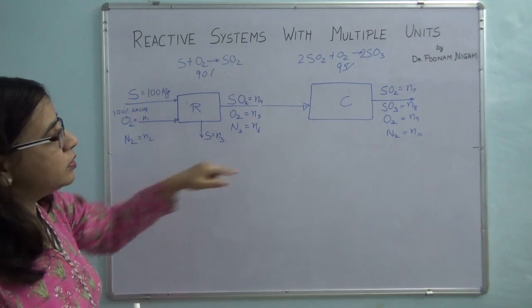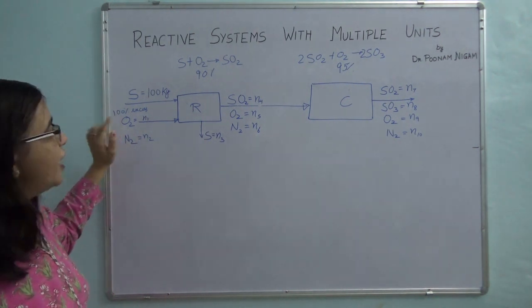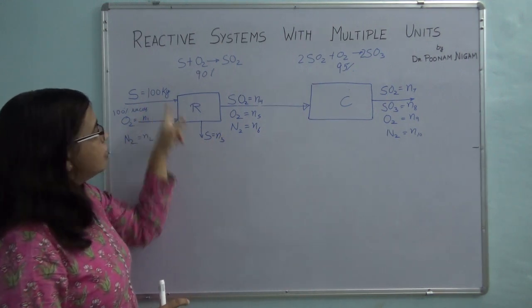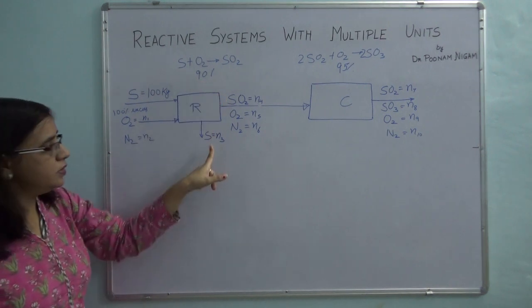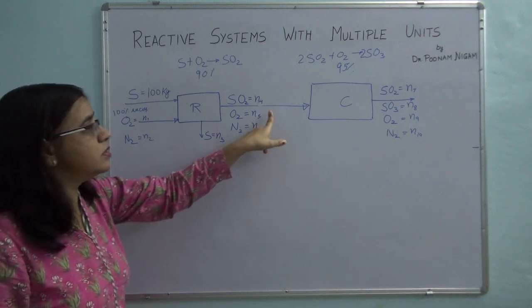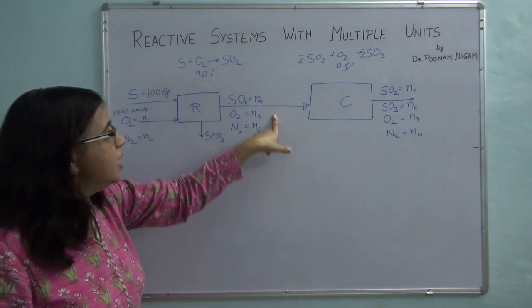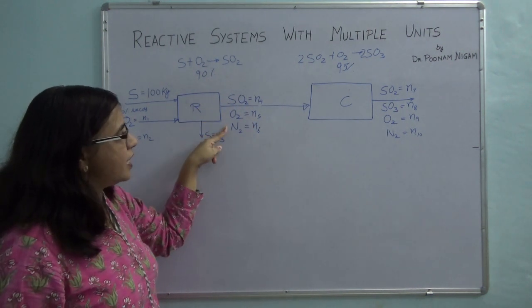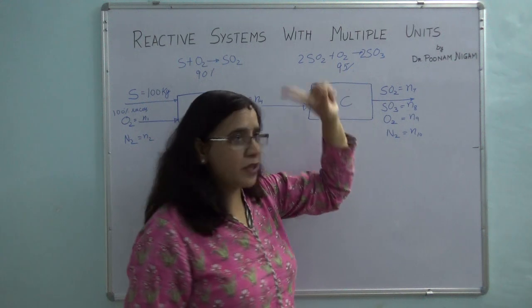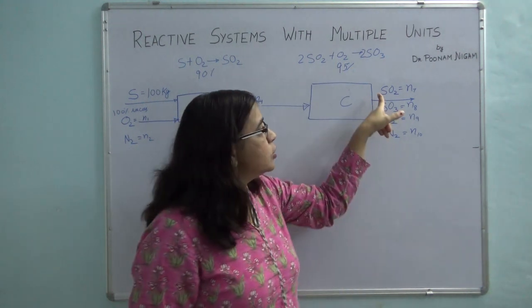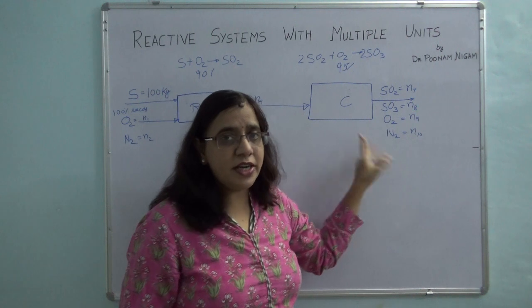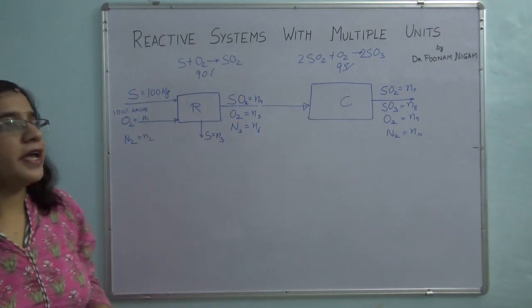The next step is to make a fully labelled flowchart. I have marked all flow rates: oxygen N1, nitrogen N2. Some sulfur will not get burnt because only 90% is getting burnt, so sulfur is coming out as a solid stream N3. The gaseous stream coming out of the reactor contains sulfur dioxide N4, oxygen N5, and nitrogen N6. After the converter, since conversion is not 100%, unconverted sulfur dioxide also comes out along with sulfur trioxide, oxygen, and nitrogen.